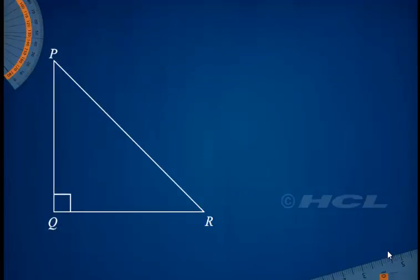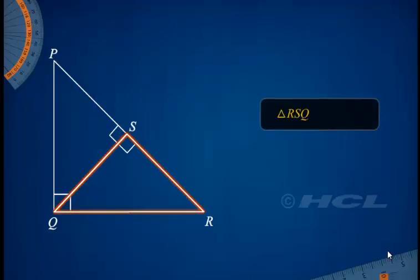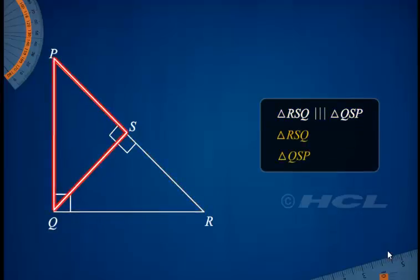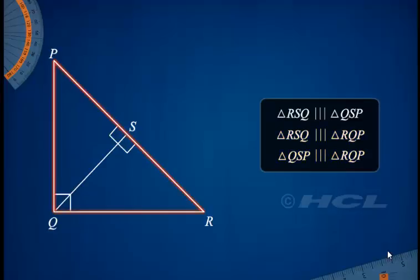Let's drop a perpendicular from the vertex of the right-angle of this right-angled triangle as shown. Do you know that we get three right-angled triangles that are similar? Observe that triangle RSQ is similar to triangle QSP, and triangles RSQ and QSP are similar to triangle RQP.